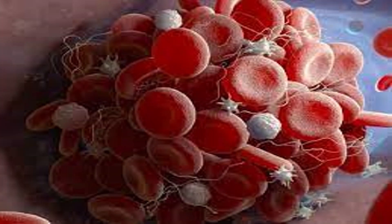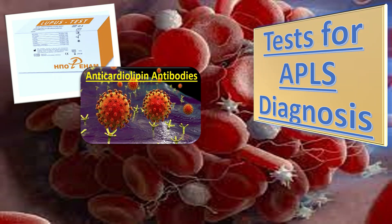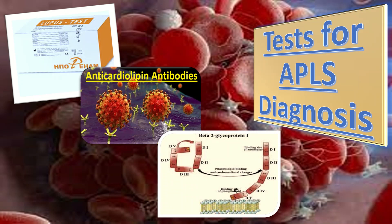Coming to the antiphospholipid antibody syndrome diagnosis, also called APLS. To diagnose APLS, it is mandatory that the woman has two positive tests at least 12 weeks apart of either lupus anticoagulant, or anti-cardiolipin antibodies of IgG or IgM class in a medium or high titer of over 40 grams per liter, and the third one is anti-beta-2 glycoprotein-1 antibody.